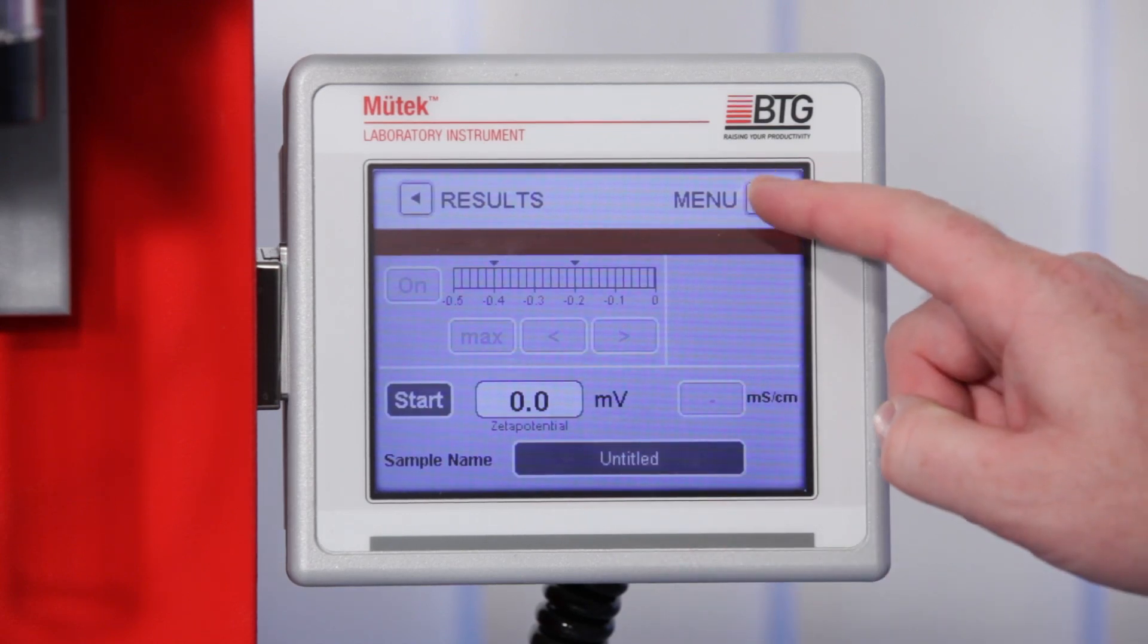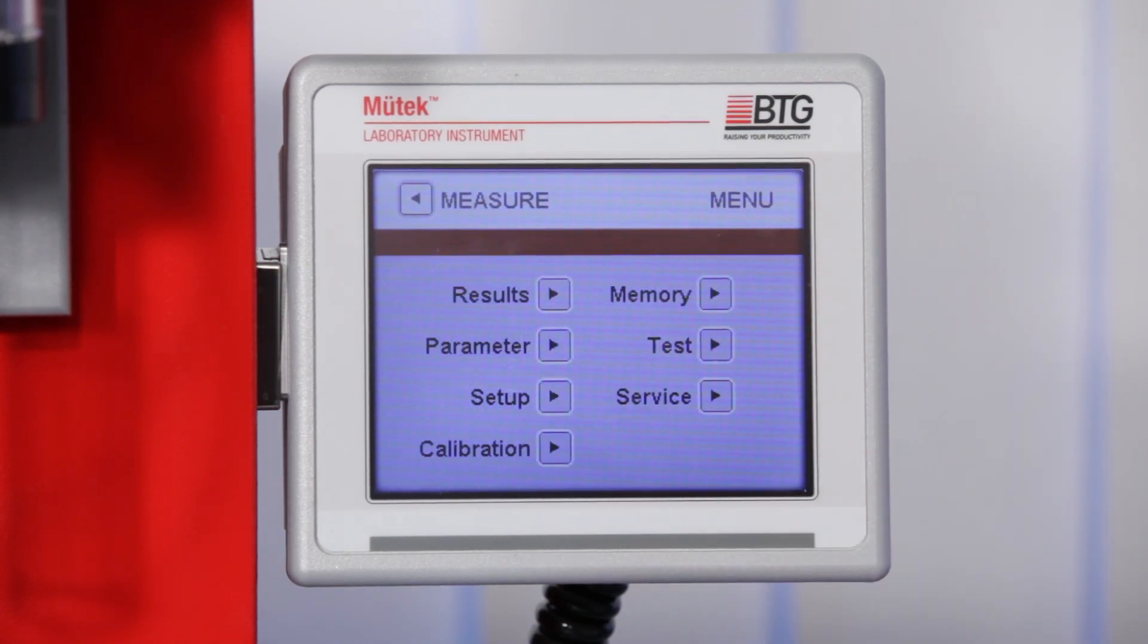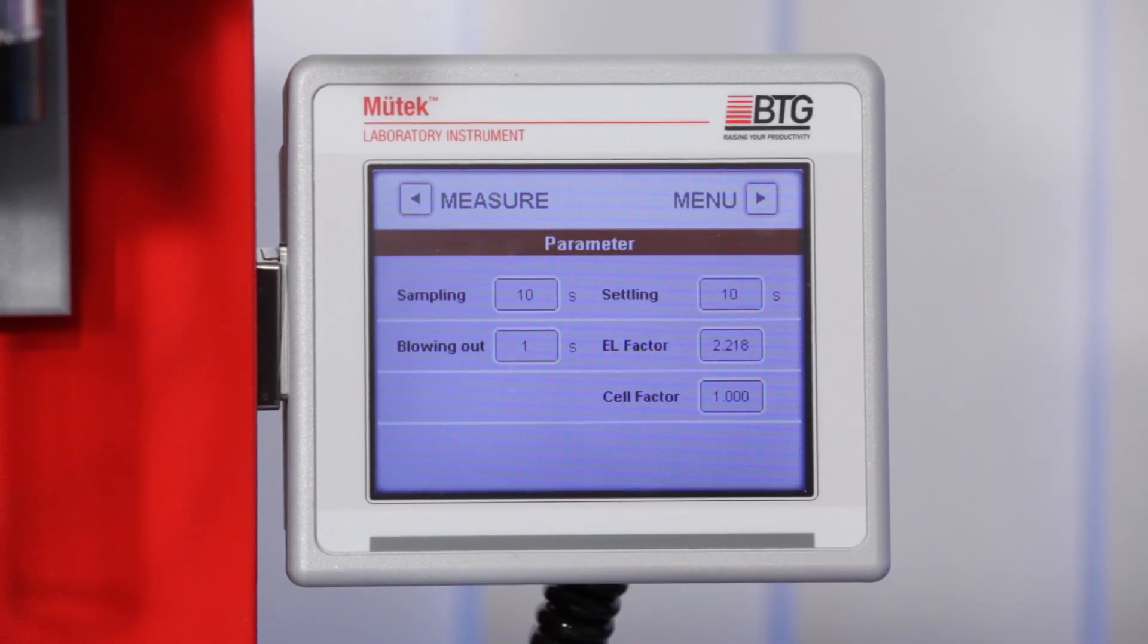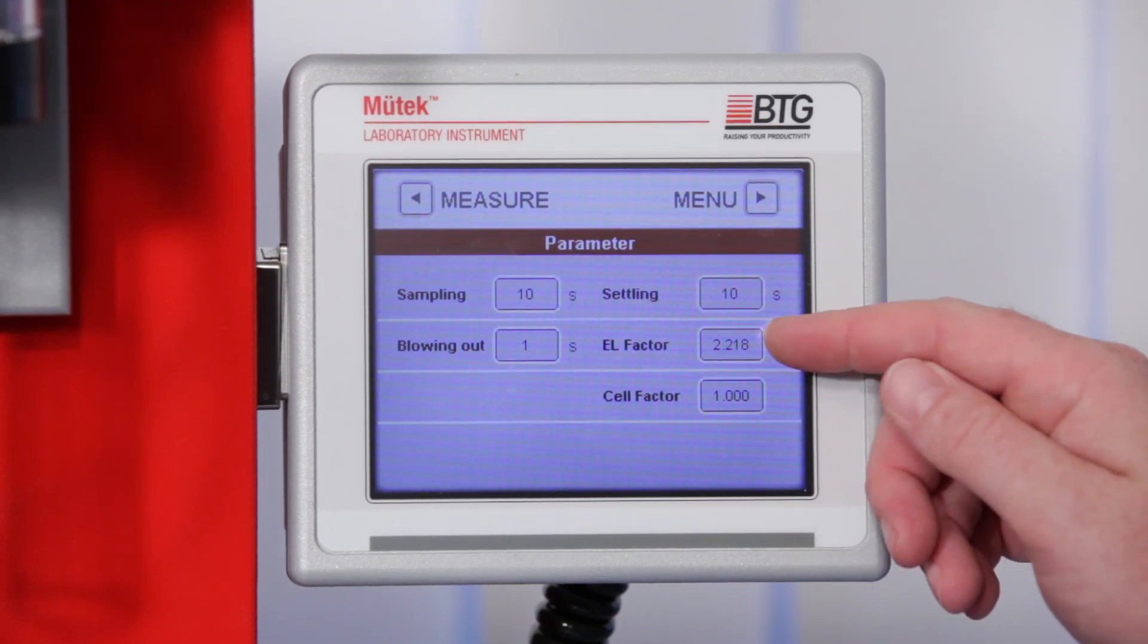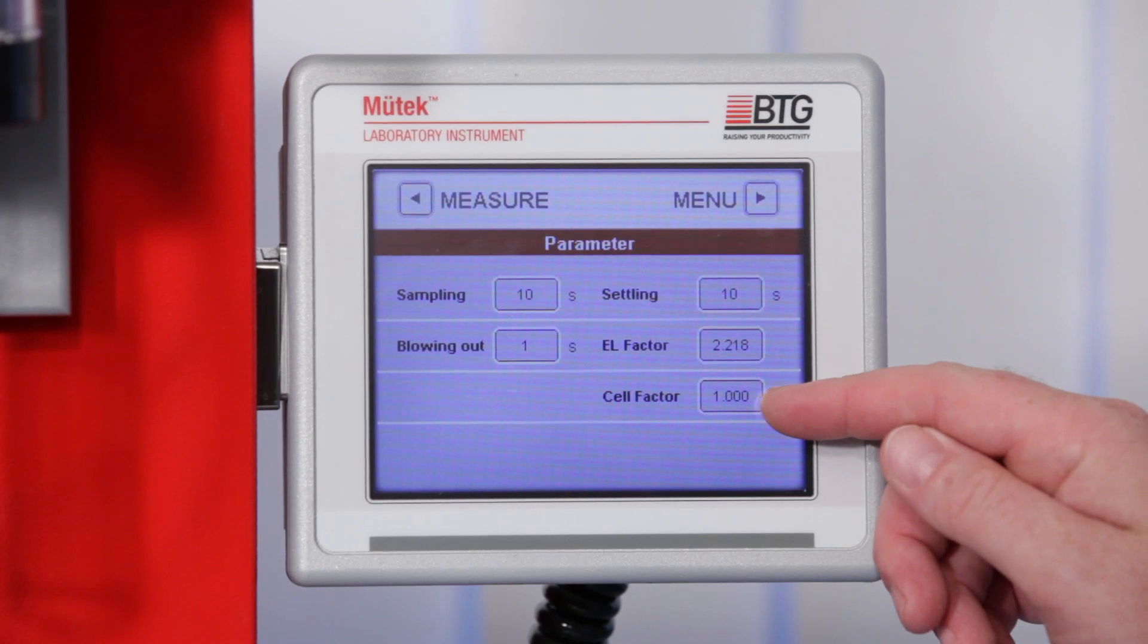Press the Menu button if special adjustments for the upcoming measurements are necessary. Under Parameters, you can view or change the time sequence settings of a measurement, as well as the calibration factors for measuring conductivity and streaming potential.